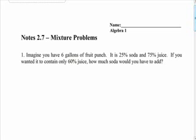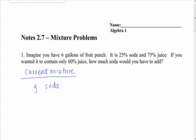If you want it to contain only 60% juice, how much soda would you have to add? Let's back it up and read it again. You have six gallons of fruit punch currently. It's 25% soda and 75% juice. Let's figure out the current mixture.